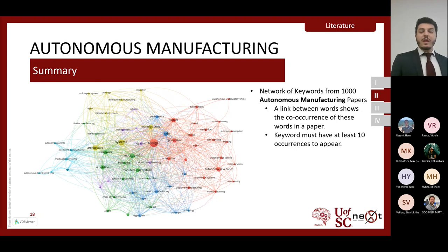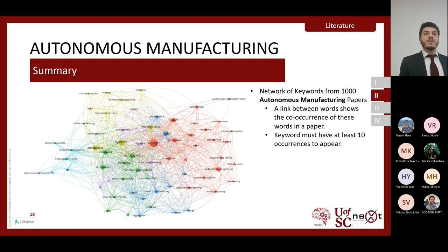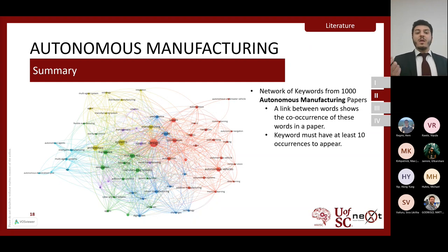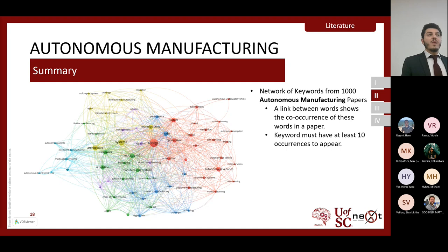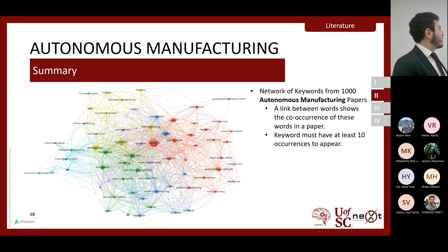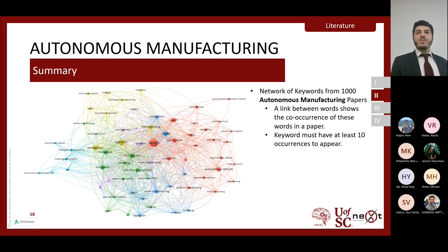As a quick summary of autonomous manufacturing trends, we gathered about 1,000 autonomous manufacturing papers and extracted keywords. For a keyword to appear, it must have appeared in at least 10 published papers, and any linkage between them means they appeared in the same paper. One notable finding is the lack of semantic web keywords — with only 'ontology' showing up — indicating a gap in semantic web work within autonomous manufacturing.